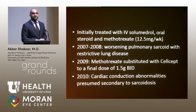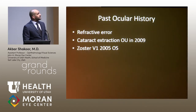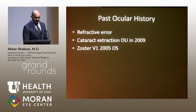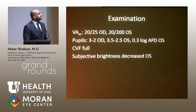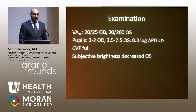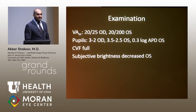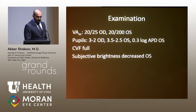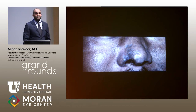Don't forget to check people's hearts when they have sarcoid. His past ocular history was significant only for prior cataract extraction and a history of zoster affecting the first division of the trigeminal nerve on the left side.